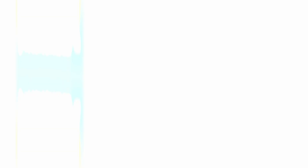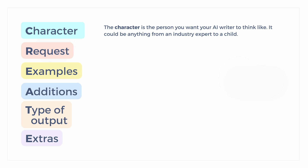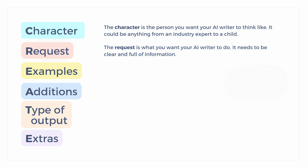Using the CREATE framework would be a useful step to generating a prompt that will work for you. The character is the person that you want your AI writer to think like — it could be anything from an industry expert to a child. The request is what you want your AI writer to do, and it needs to be clear and full of information. Giving examples will help your AI writer understand what you want it to do.